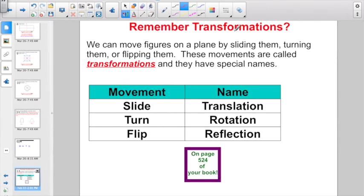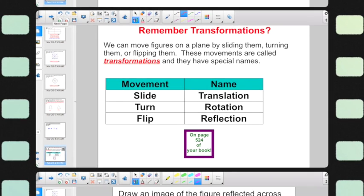So do you remember transformations? When we move figures on a plane by sliding, turning, or flipping them? We had it in an investigational lesson. If you slide a figure, it was called a translation. If you turn a figure, it was called a rotation. Or if you flip a figure, it was called a reflection, right? This is all review, which should be found back on page 524 of your book.